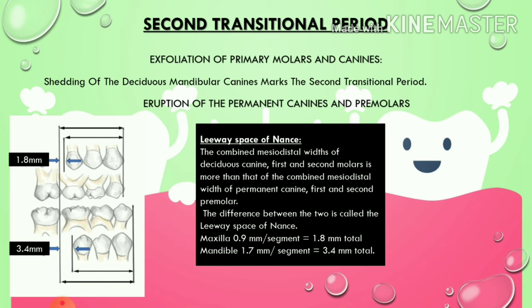The difference in widths between deciduous and permanent teeth creates a surplus called the leeway space of Nance — extra space remaining after eruption of permanent canines and premolars. This is the exact opposite of incisor liability, which is a shortage of space. The amount of leeway space: for the maxilla it is 0.9 mm per segment (1.8 mm total); for the mandible it is 1.7 mm per segment (3.4 mm total).